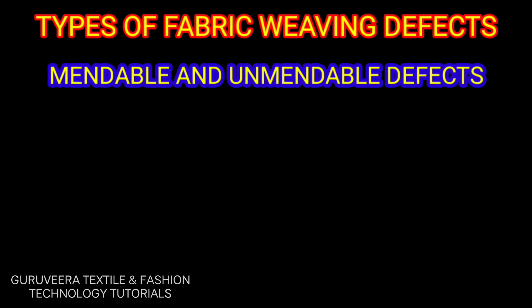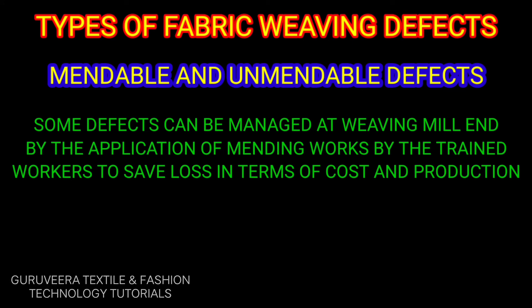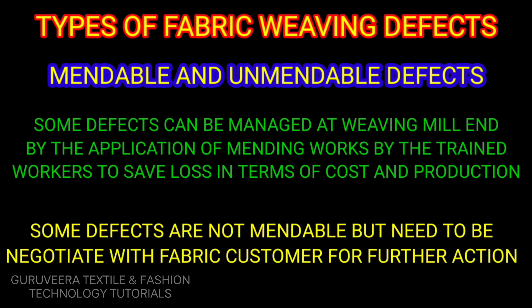The third group is mendable and unmendable defects. Some defects can be managed at the weaving mill by trained workers through mending work, to save costs and production losses. Some defects are not mendable and need to be negotiated with the fabric customer for further actions.